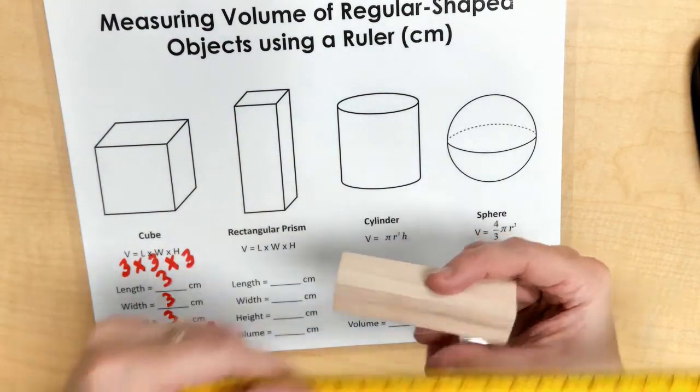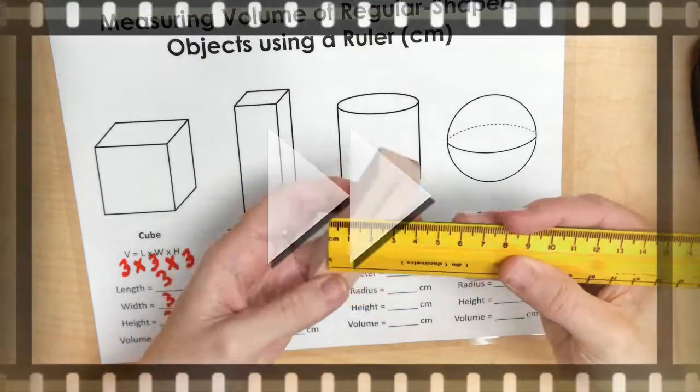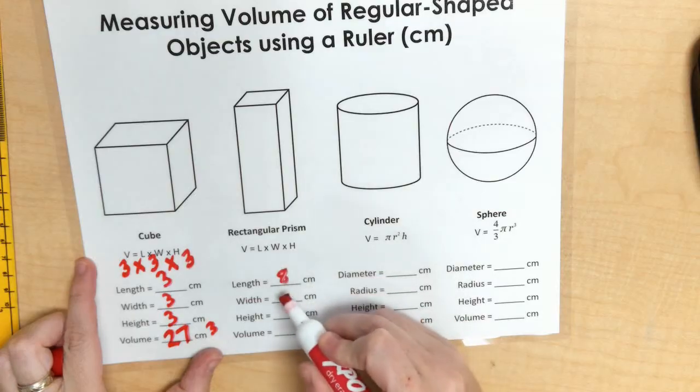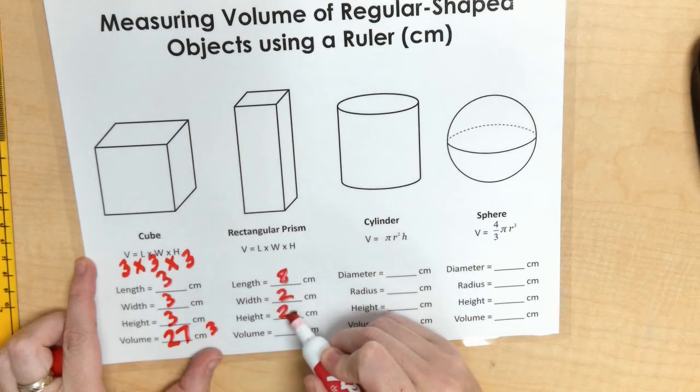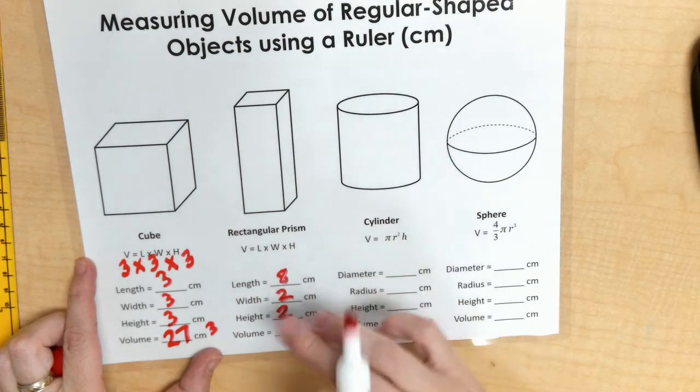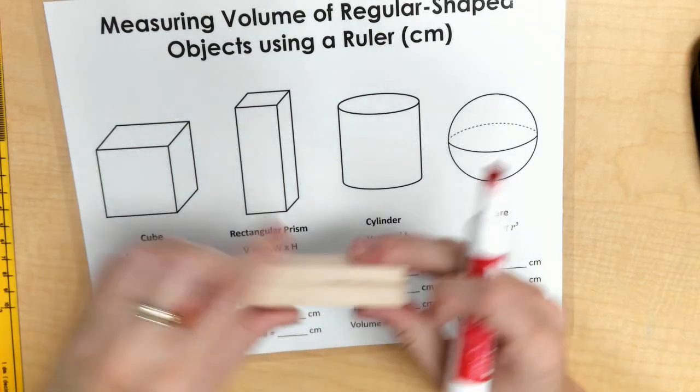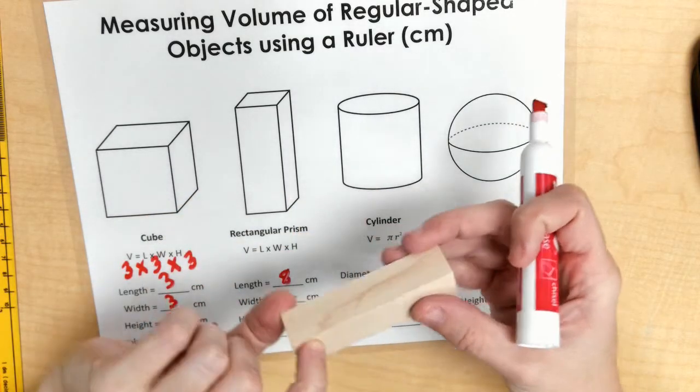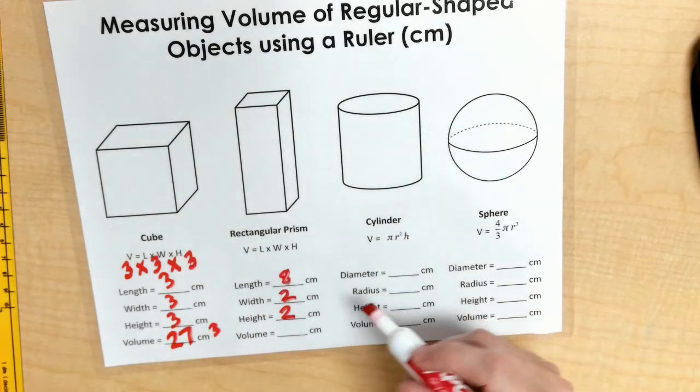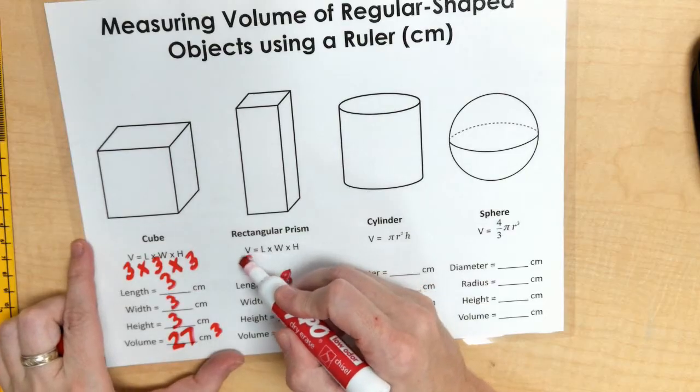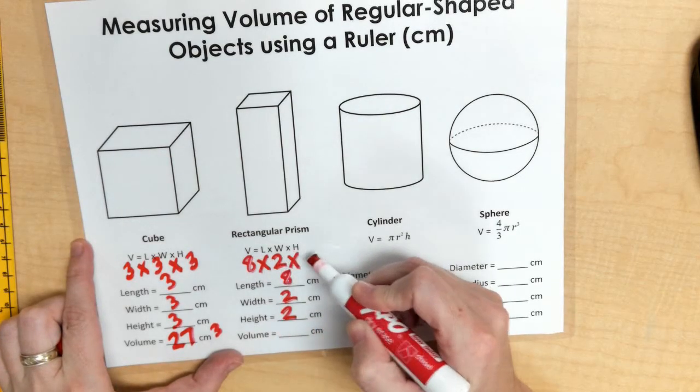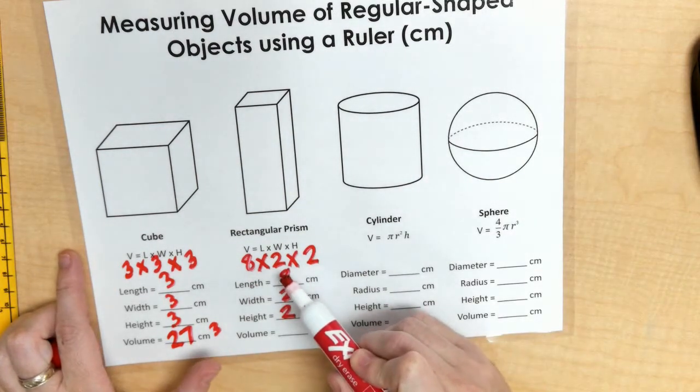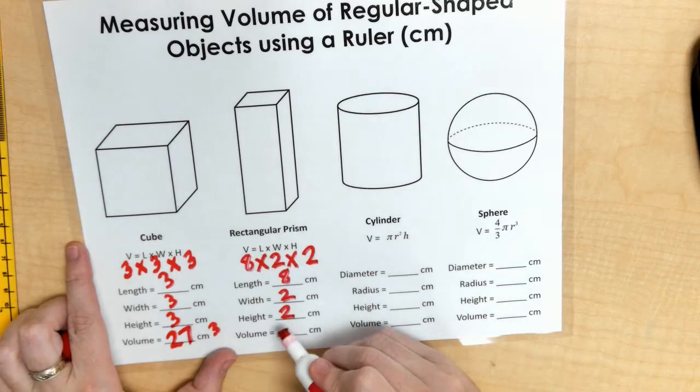Now with my rectangular prism, so my length is 8, my width and my height are 2. You could change them as such because it depends on kind of how you're viewing it on what is your length, what is your width, what is your height. But our formula would look something like this. It's 8 times 2 times 2 or length times width times height. 8 and 2 is 16. 16 and 2 is 32. And so our volume is 32 centimeters cubed.